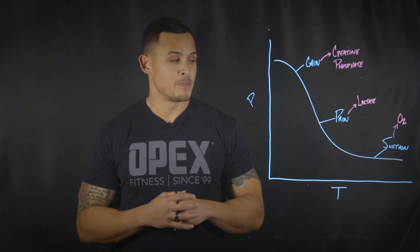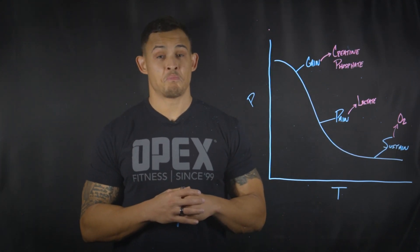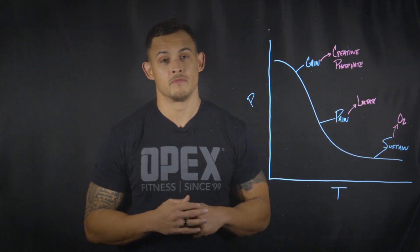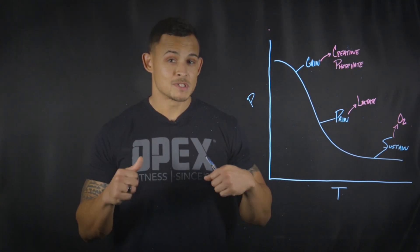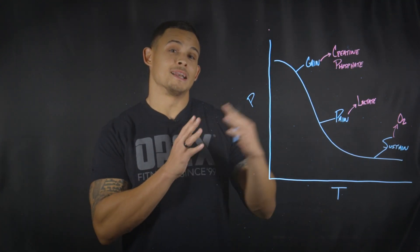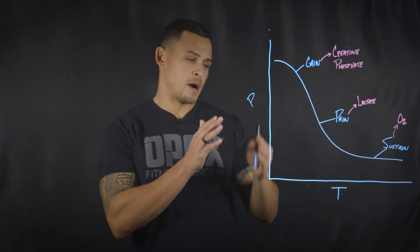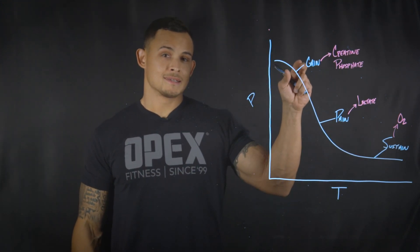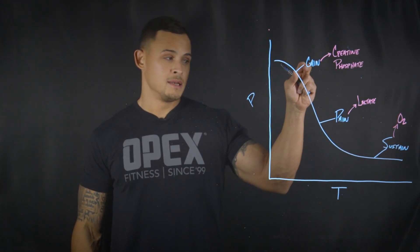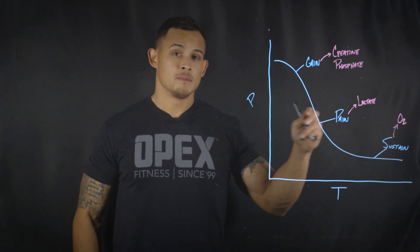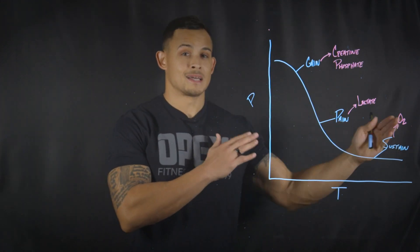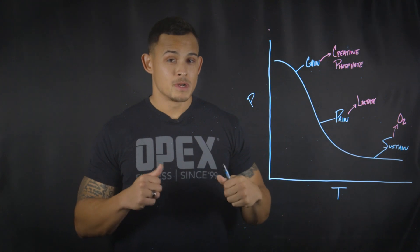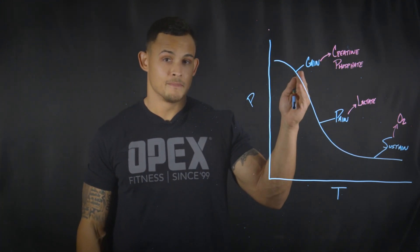OPEX pain — think about that as painful, unsustainable activity. Think about doing the same sprint but extending the time out. We have a power and time curve: power is highest in OPEX gain, it lowers in OPEX pain but we're extending time. So think about doing the same assault bike sprint for 60 seconds instead of 10.